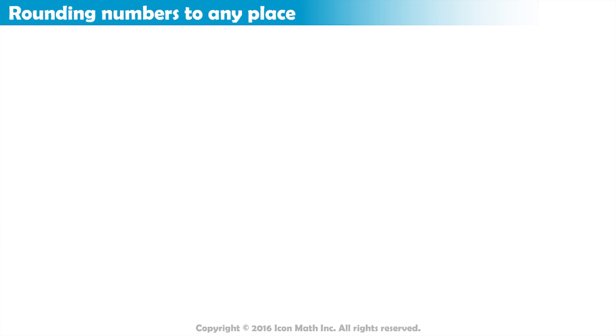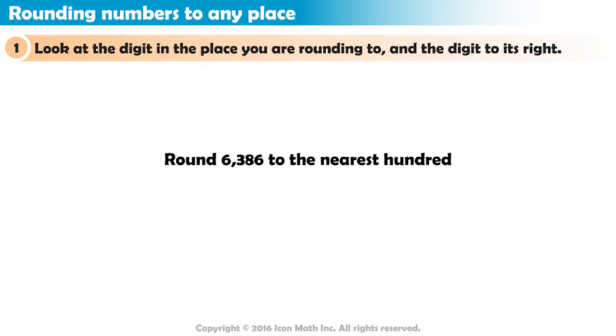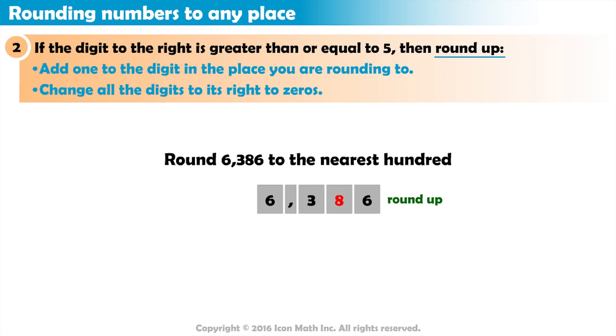For example, let us round the number 6,386 to the nearest hundred. The hundreds digit is 3, and the digit to its right is 8, which is greater than 5. So, we round up, by adding 1 to 3, and it becomes 4.